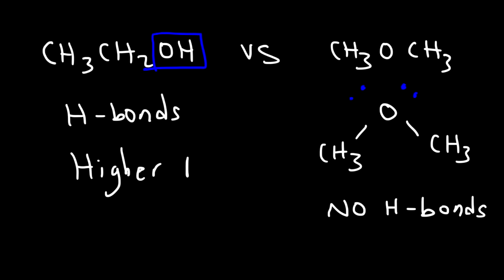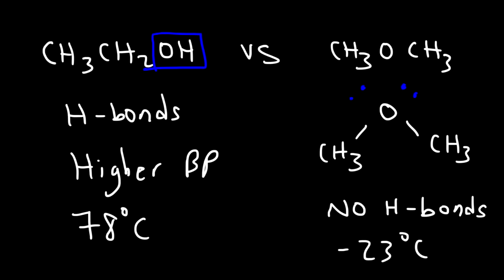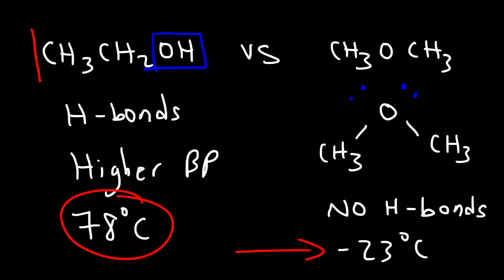Ethanol is going to have a higher boiling point and will also have a higher solubility in water due to the H-bonds. The boiling point of ethanol is about 78 degrees Celsius, and for dimethyl ether it's negative 23 Celsius. So hydrogen bonds will greatly increase the boiling point and the solubility in water of a molecule.